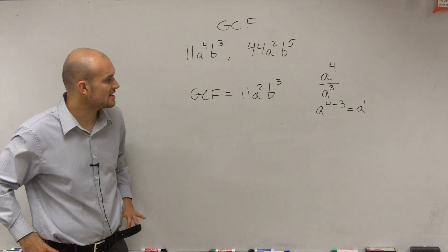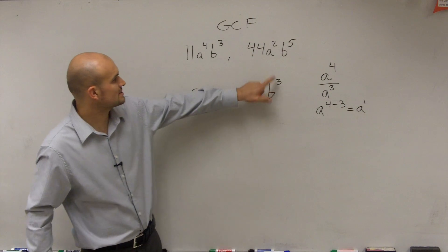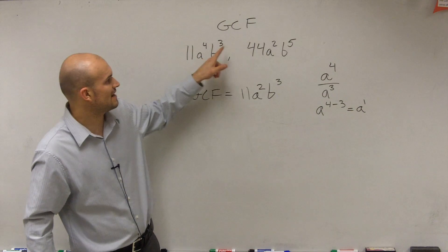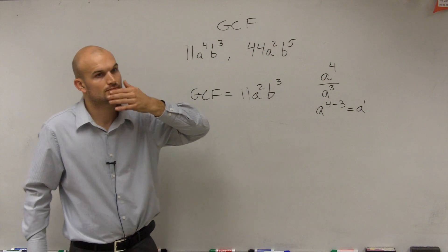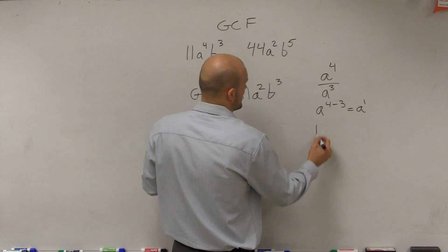So your answer for this one would be your GCF equals 11 a squared b cubed. How did you get b cubed? Because b cubed is the largest variable with the largest degree that will divide into both of those. It doesn't go in the five. You guys got to remember...